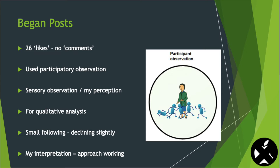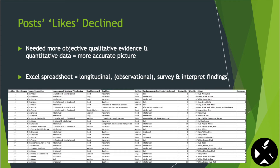When I began my posts, I had 26 likes but no comments. I used participatory observation, specifically sensory observation — or my perception — for my qualitative analysis. My following was declining slightly, but my interpretation was that my approach was working. However, my posts' likes declined further. I decided more precise, objective, qualitative evidence, as well as quantitative data, could reveal a more accurate picture.